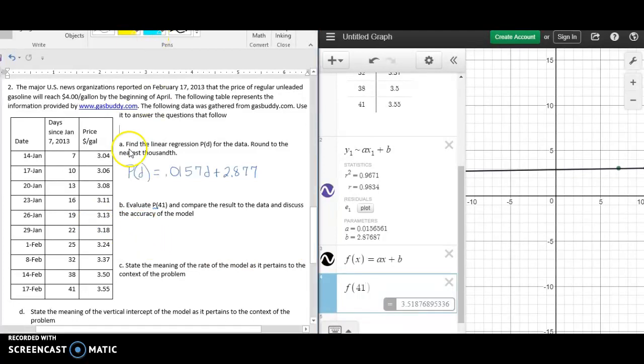We know that p of 41 equals $3.52 per gallon. Since we're talking about dollars and cents, it's $3.52 per gallon. If we were to do 41, it's not that far off, it's $3.55 actual versus $3.52, so the model is pretty accurate.